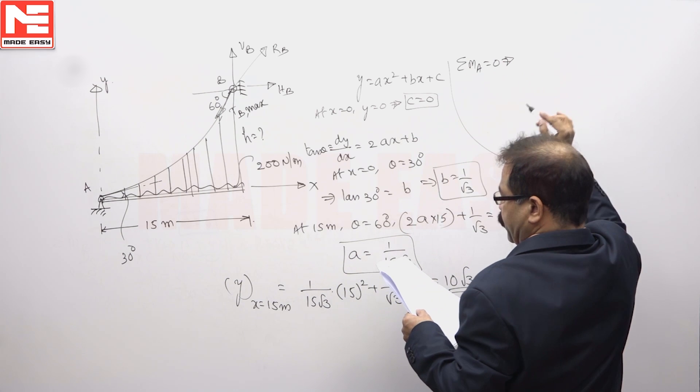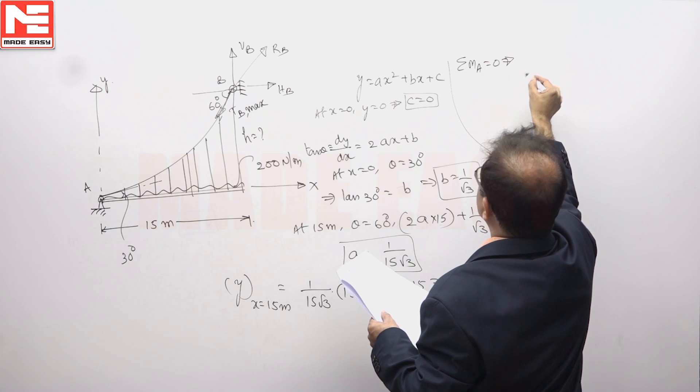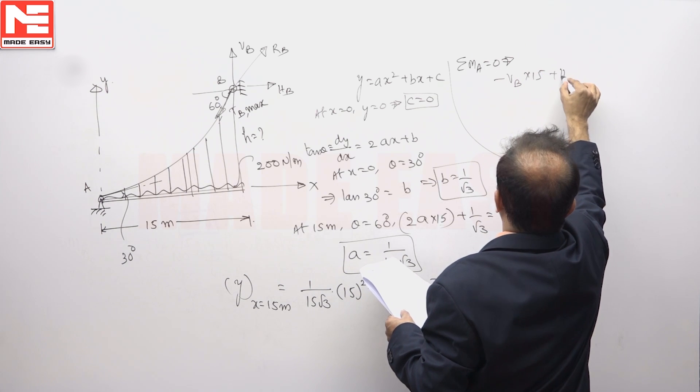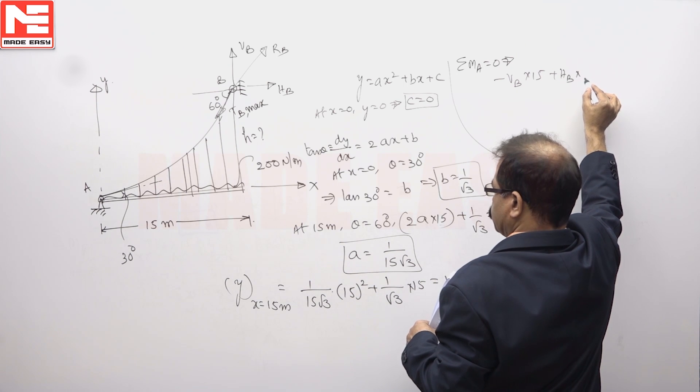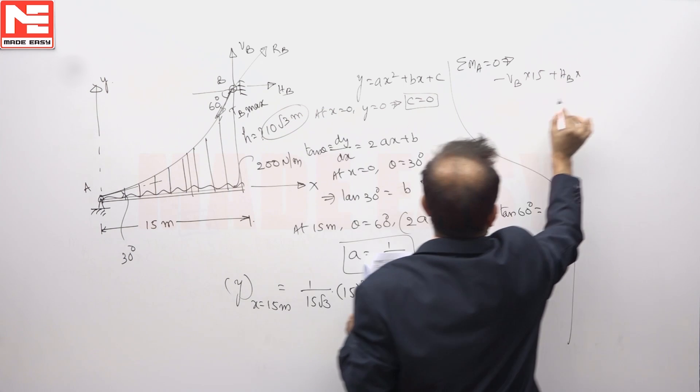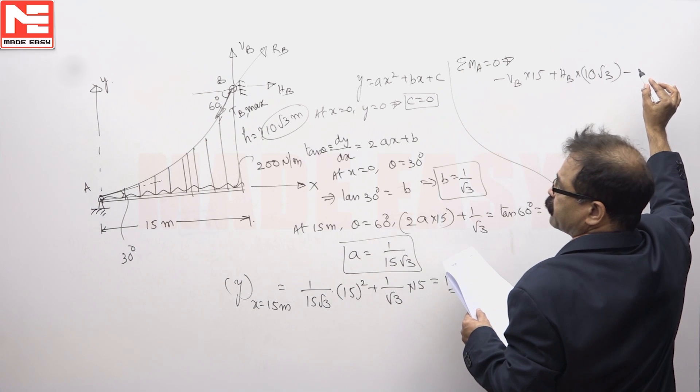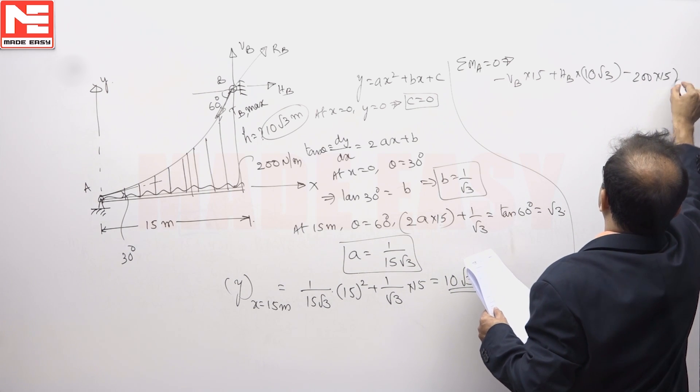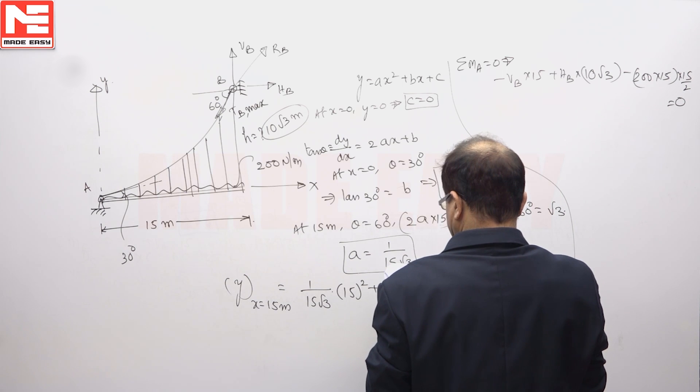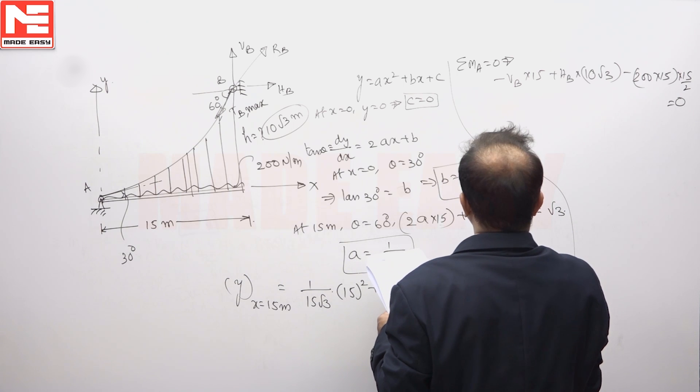You will get VB into 15 minus VB into 15 plus HB into 10 root 3. H you got now 10 root 3 meters. HB into 10 root 3 minus UDL minus 200 into 15 is the total load into 15 by 2 must be equal to 0. So you will get VB HB, there is a relationship in that, you will get one expression about that sigma MA is equal to 0.